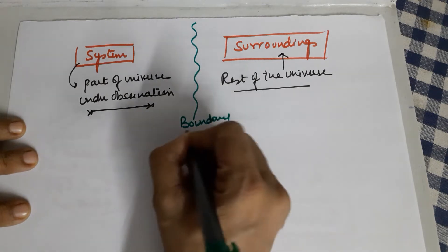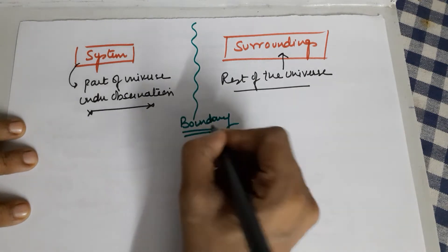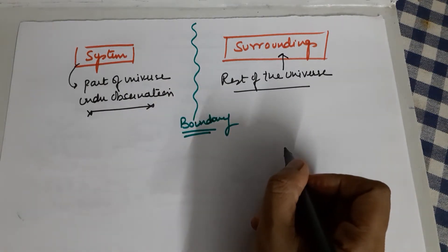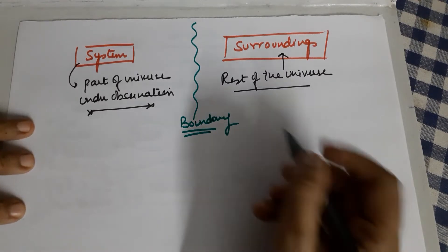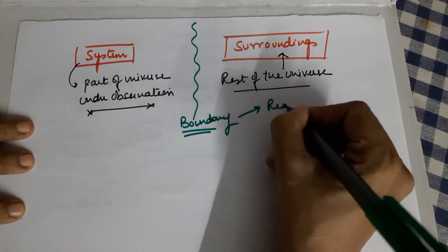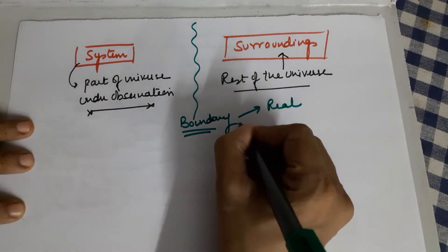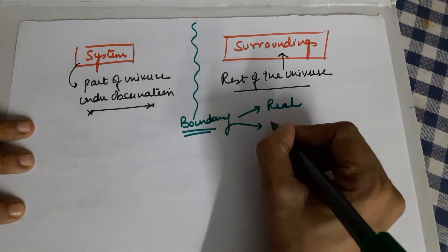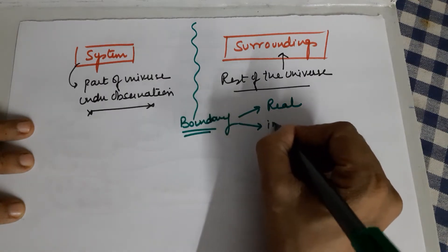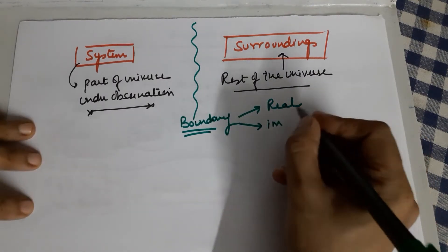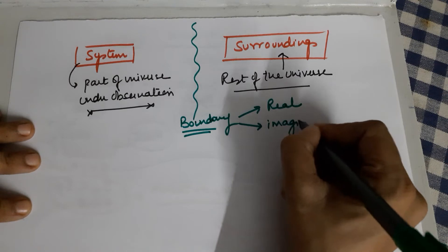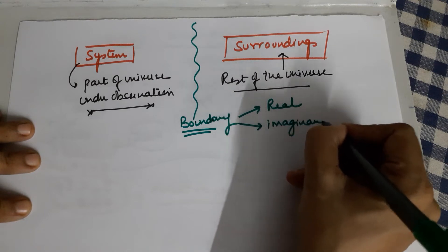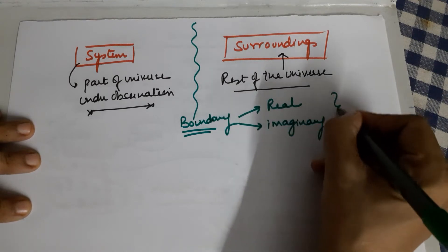This boundary separates the system from the surroundings and can be of two types: it could be a real boundary as well as an imaginary boundary. I will take up an example for this.